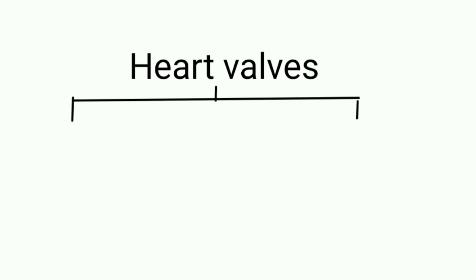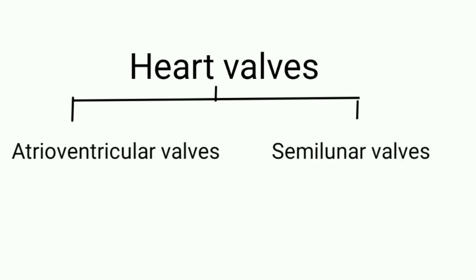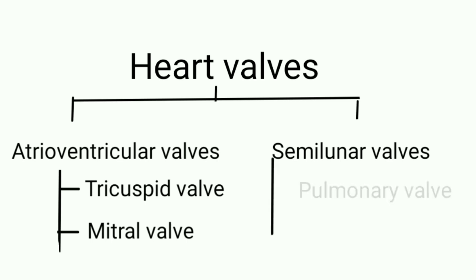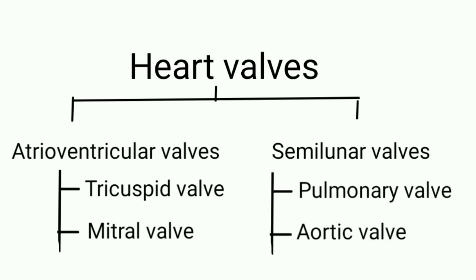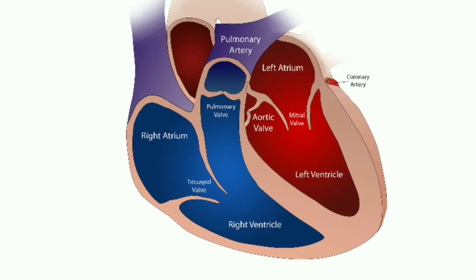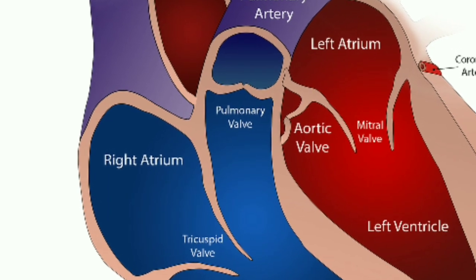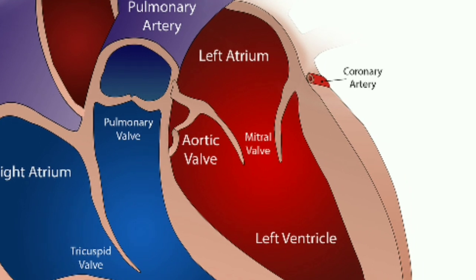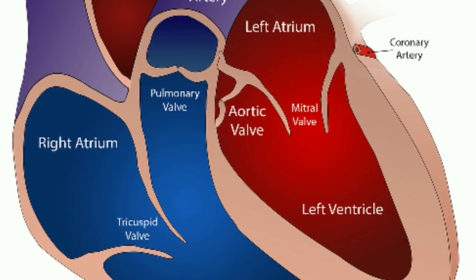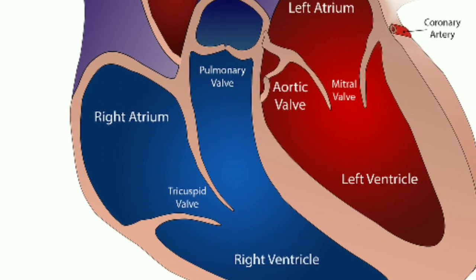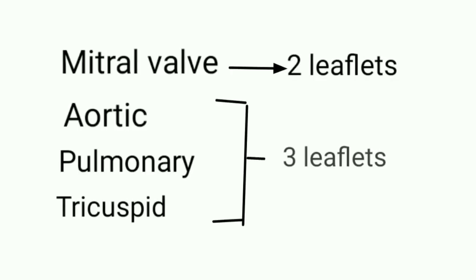Heart valves: the valves prevent the backward flow of blood. The heart has four valves divided into two categories — atrioventricular valves and semilunar valves. The tricuspid valve and mitral valve are atrioventricular valves; the pulmonary valve and aortic valve are semilunar valves. The tricuspid valve is located between the right atrium and right ventricle. The mitral valve, or bicuspid valve, is located between the left atrium and left ventricle. The pulmonary valve is located between the right ventricle and the pulmonary artery. The aortic valve is located between the left ventricle and the aorta. The mitral valve has only two leaflets; the aortic, pulmonary, and tricuspid valves have three. The leaflets of the mitral and tricuspid valves are supported by papillary muscles and chordae tendineae.